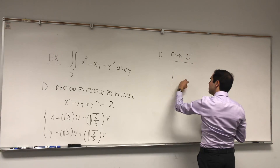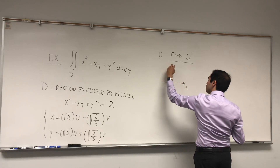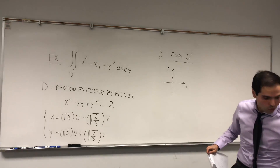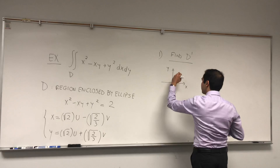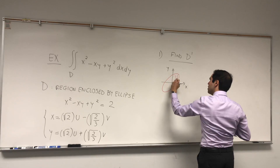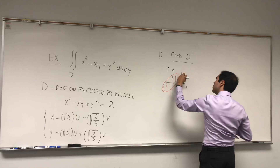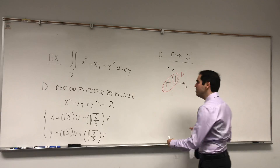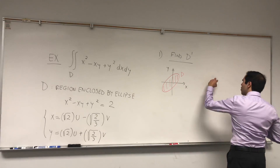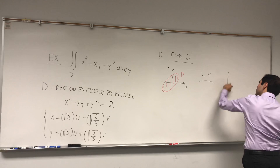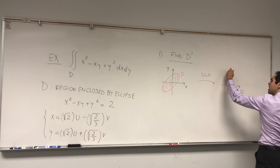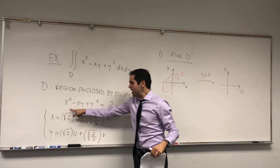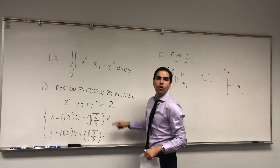What happens in the x and y variables — D is kind of like a slanted or diagonal ellipse. If we define those variables u and v implicitly, D changes into hopefully a much nicer object. Let's figure out what this is by using the equation of the original ellipse.